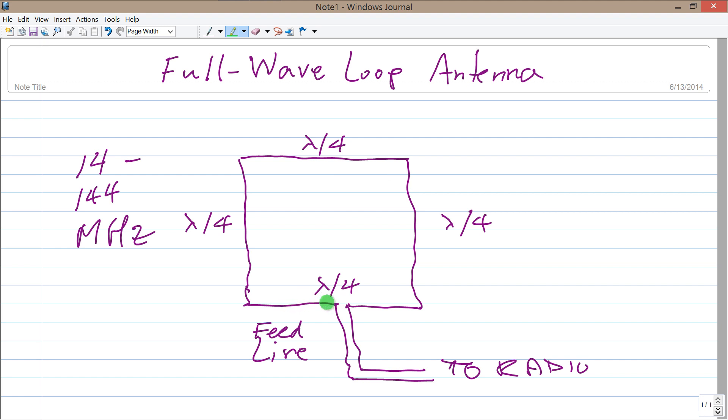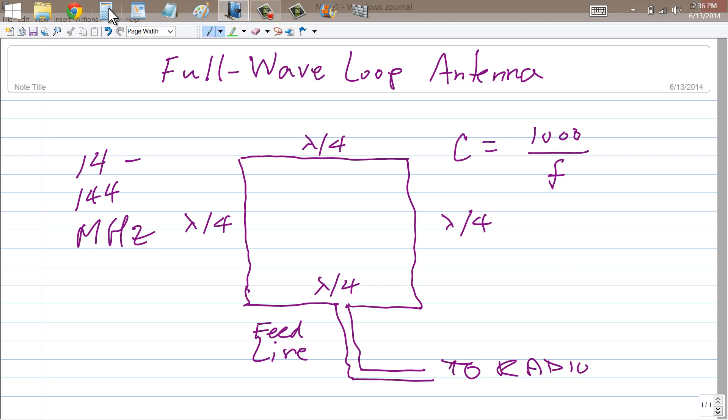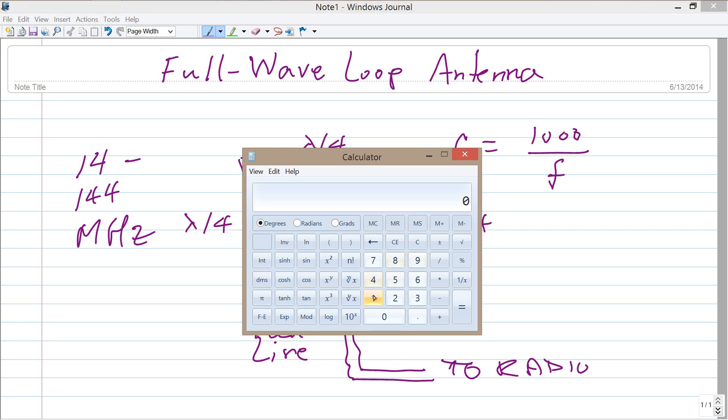So actually when you have a full wavelength loop like this, you should make the antenna pretty close to a full wavelength in free space. In fact, the formula, as I recall, the circumference C in feet is 1000 divided by the frequency in megahertz. That is an approximate formula. Let's just make a calculation here, bring up our handy dandy calculator and divide 1000 by 14.